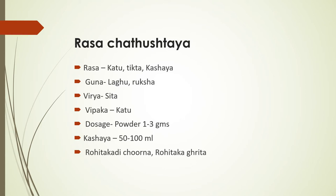Dosage of bark powder is 1 to 3 grams, and kashaya decoction is 50 to 100 ml. The yogas are Rohithaga churna and Rohithaga ghritha.